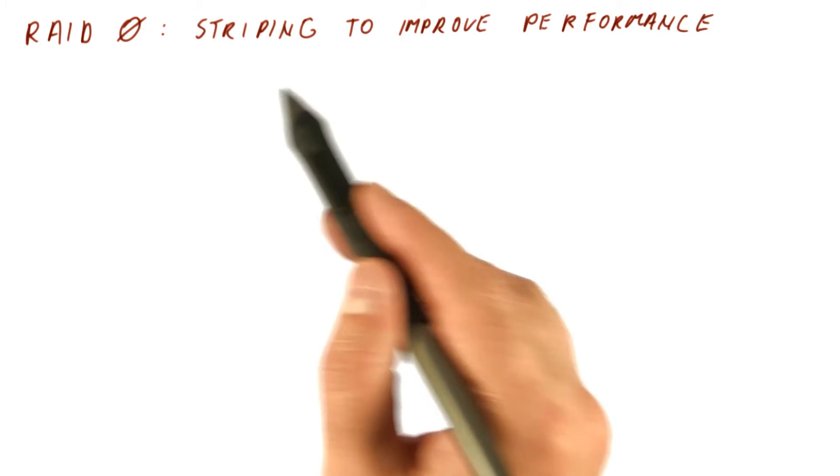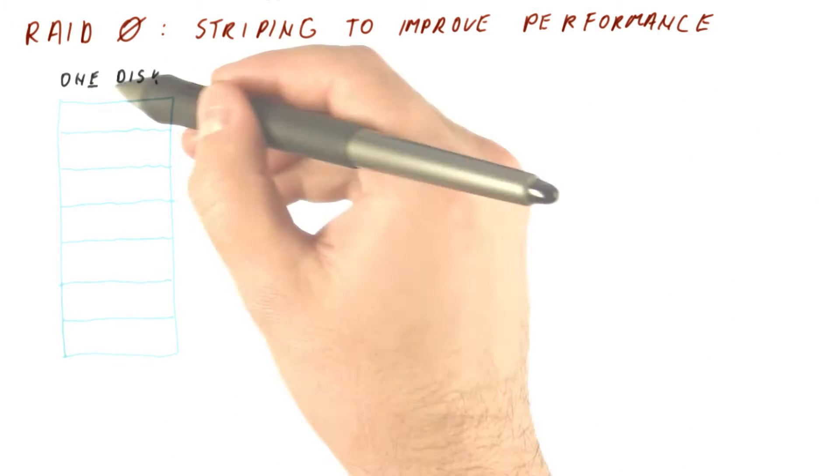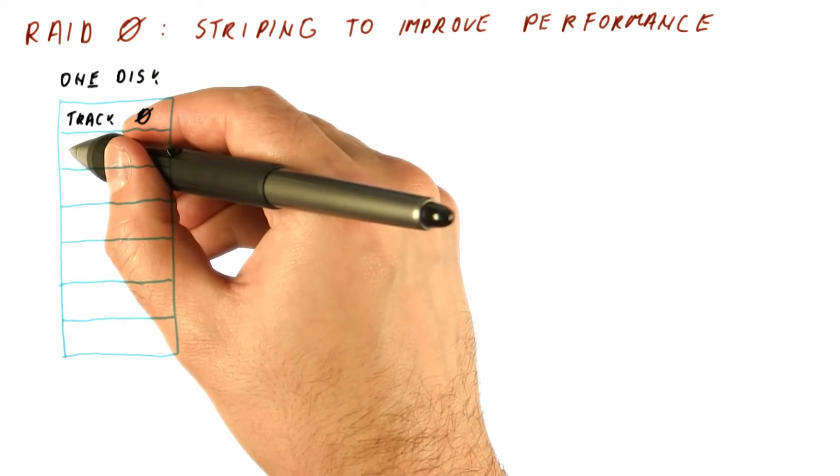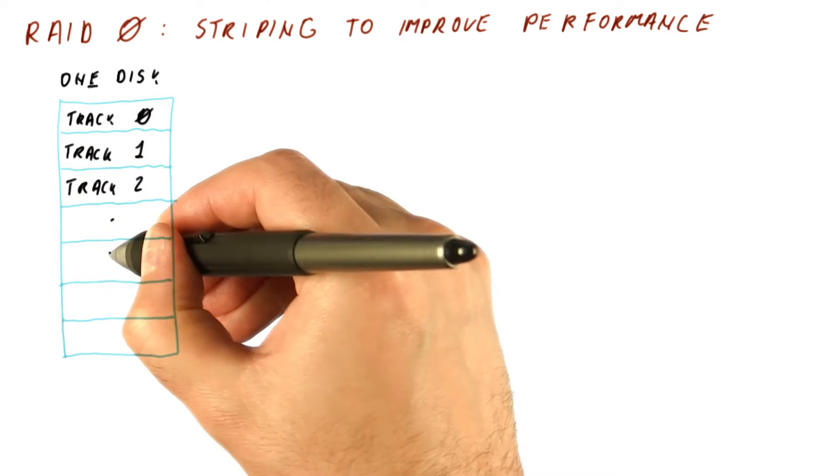RAID 0 uses a technique called striping to improve performance. If we have one disk, it would have track 0, track 1, track 2, etc.